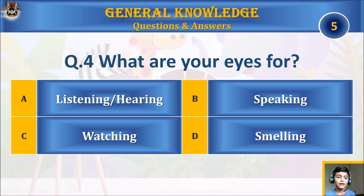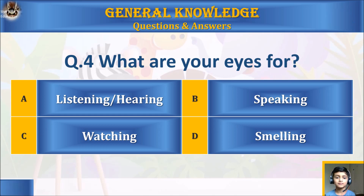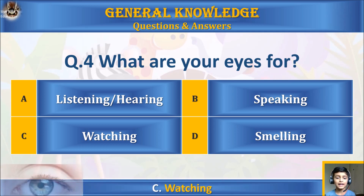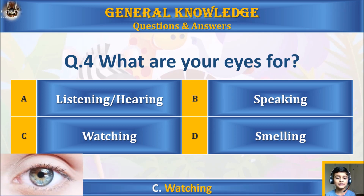Question four: what are your eyes for? A) listening and hearing, B) speaking, C) watching, or D) spelling? Your time starts. The answer is C) watching.